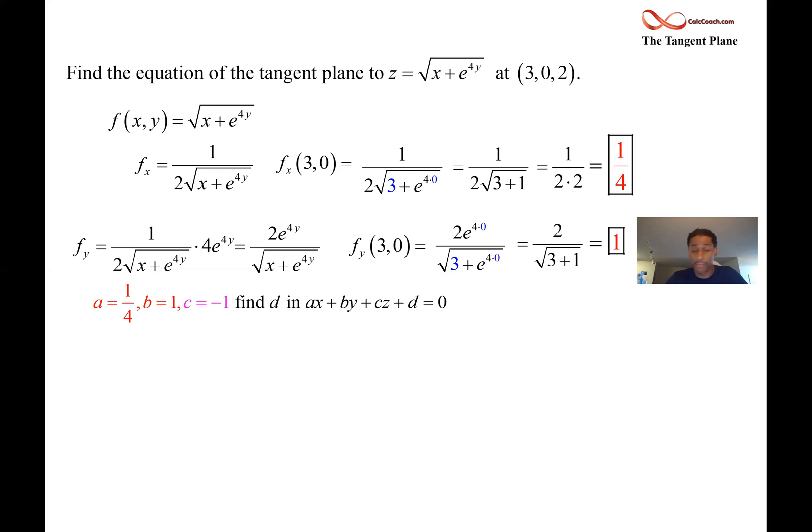So a is a fourth, b is 1, c is negative 1, x naught is 3, y naught is 0, z naught is 2. And this is going to give us what d is. Our job is to figure out what d is.